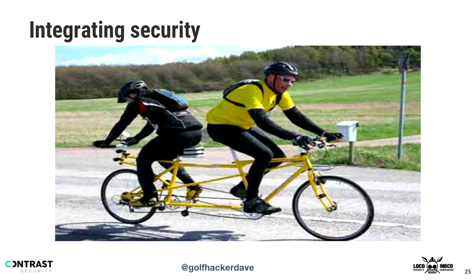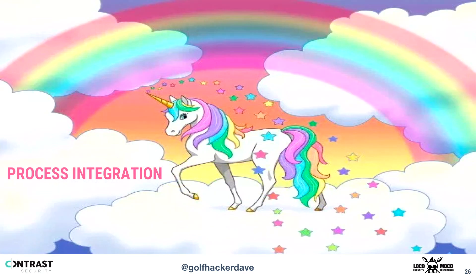Security and dev are always going in opposite directions. Who still has separate tracking systems — security bugs in one directory, software bugs in another? We're trying to get past that. Process integration is not a unicorn. There's no easy button. Every org works differently; they all have different processes and different tools. As a product security person, don't go in thinking everything's going to be rainbows and unicorns — some things are going to integrate well, some aren't.